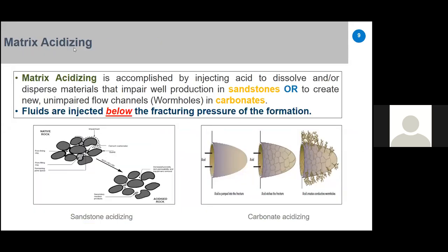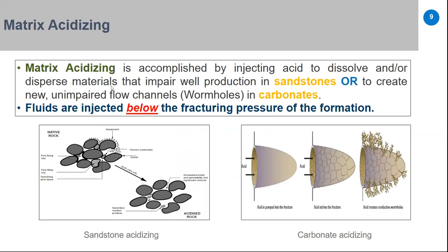Matrix acidizing is accomplished by injecting acid to dissolve or disperse materials that impair well productivity. In sandstone, the objective is to dissolve damaging material to restore productivity. In carbonate formations, we typically create new unobstructed flow channels called wormholes. So in sandstone we remove damage, and in carbonate we create new flow paths — the wormholes.